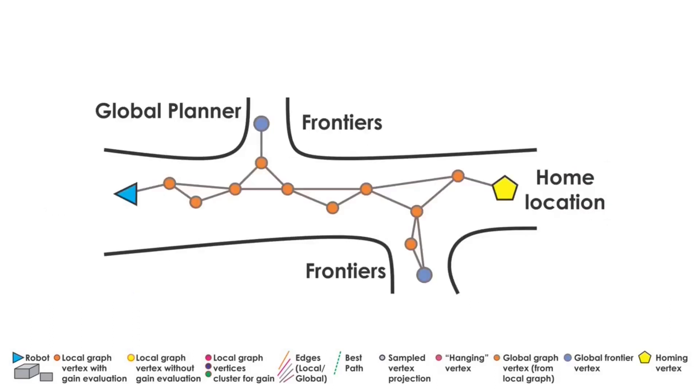The global planner maintains a sparse graph built from the high exploration gain paths of the local graph as well as sparsely sampled robot poses. Vertices in this graph that have high volumetric gain are marked as frontier vertices. When local exploration is exhausted, the planner repositions the robot to a new frontier using the global graph.